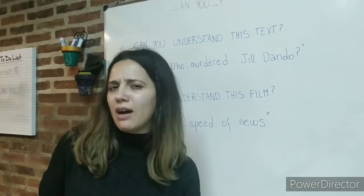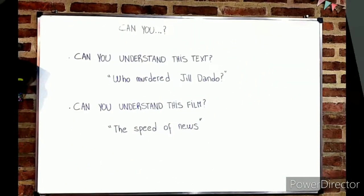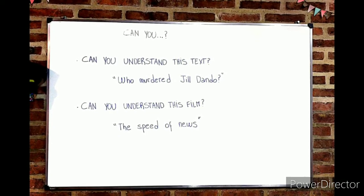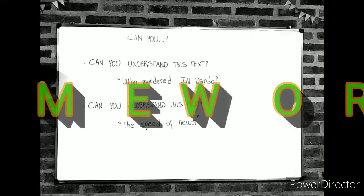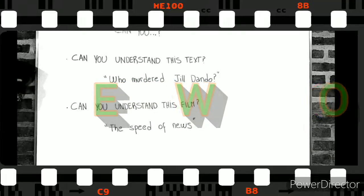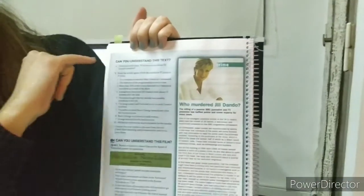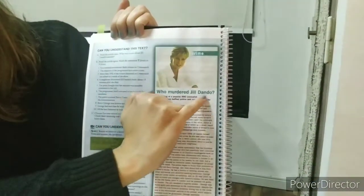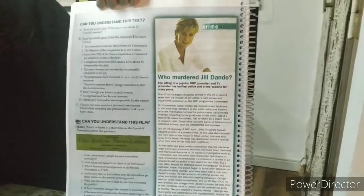This is what you are going to do today — my way of giving you a warm welcome to our class. Now let's go to the table and I'll show you the homework. Time for homework! Today we are going to work only with the student's book. We are going to go to page 83, where you will find the activities. First: 'Can you understand this text?' — the text 'Who Murdered Jill Dando?' — and then: 'Can you understand this film?'